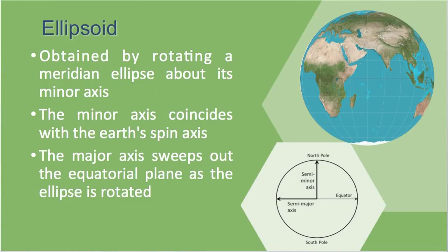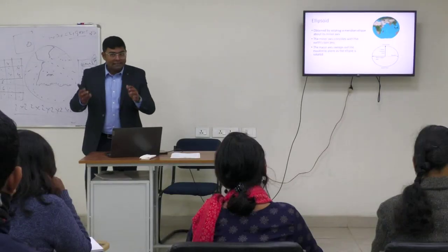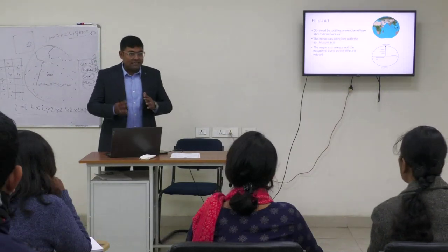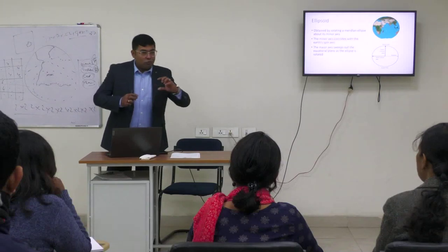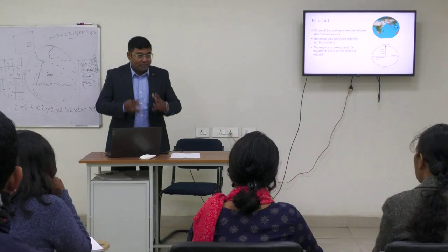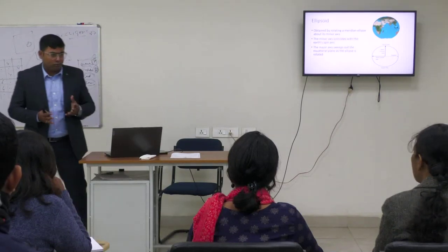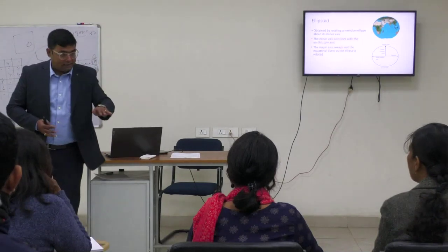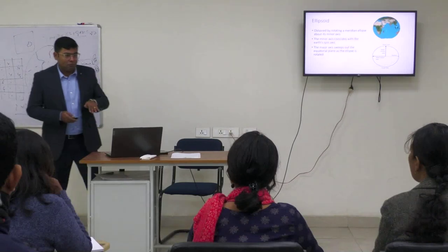The minor axis coincides with the Earth's spin axis. The major axis sweeps out the equatorial plane as the ellipse is rotated. The basic idea from Newton is that due to centrifugal forces as the Earth rotates, the equatorial region must bulge out. This has been proved correct from space observations — it is a close approximation of the Earth model.